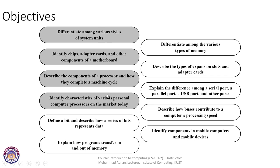Today we are going to discuss what a bit is and describe how a series of bits represent data. We are also going to discuss how the processor executes bits and bytes and why understanding these is important. We will explain how programs are transferred in and out of memory, differentiate among different types of memory, describe expansion slots and adapter cards, and discuss serial, parallel, USB, and other ports, and how buses contribute to processing speed.